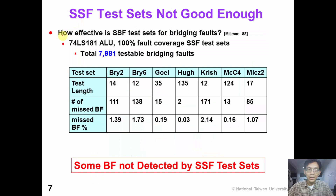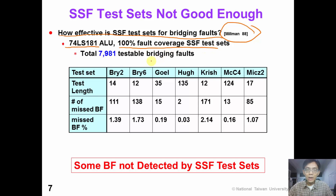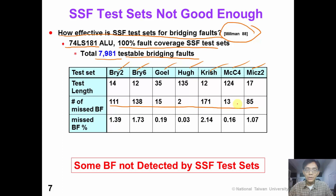Now we have a good question: since we already have single stuck-at fault test patterns, how effective is a single stuck-at fault test set for bridging faults? In 1988, Millman performed an experiment on a 74-181 ALU. They applied several different tests and 100% fault coverage single stuck-at fault test sets. In this table, each column represents a different test set. Totally, there were 8000 testable bridging faults in the circuit. The experimental results show that there are still many bridging faults not detected by the 100% single stuck-at fault test set, so a single stuck-at fault test set alone is not good enough to detect all bridging faults.